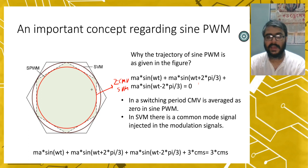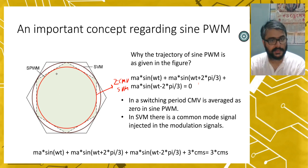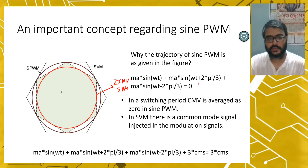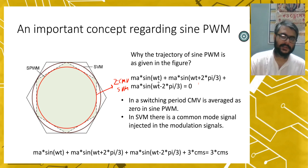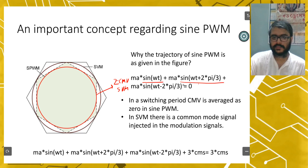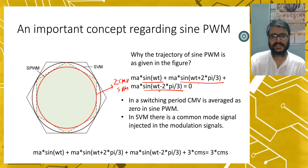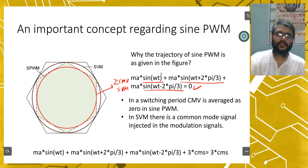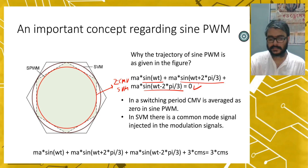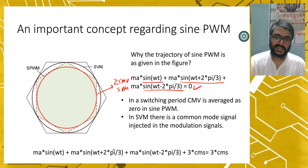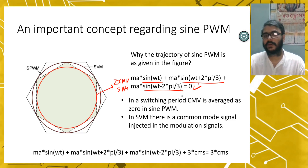Interestingly, for sine PWM, if you implement it using space vector representation, the trajectory is also within this range. For any three-phase sine wave — sine(ωt) plus sine(ωt + 2π/3) plus sine(ωt − 2π/3) multiplied by the modulation amplitude index MA — the sum is zero for any instant. So for sine PWM, the common mode voltage is zero in every instance. Although there will be certain switching transitions, in an average sense over a switching cycle, the CMV will be zero.